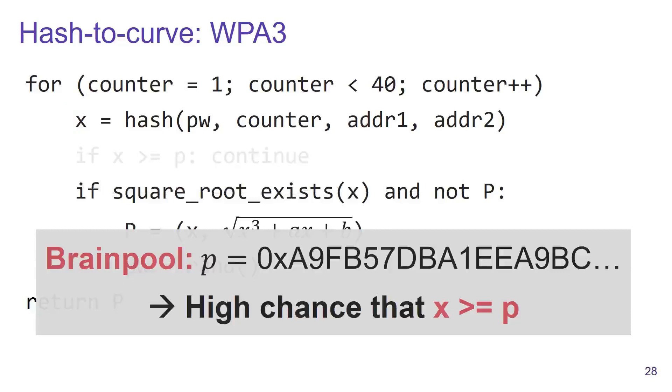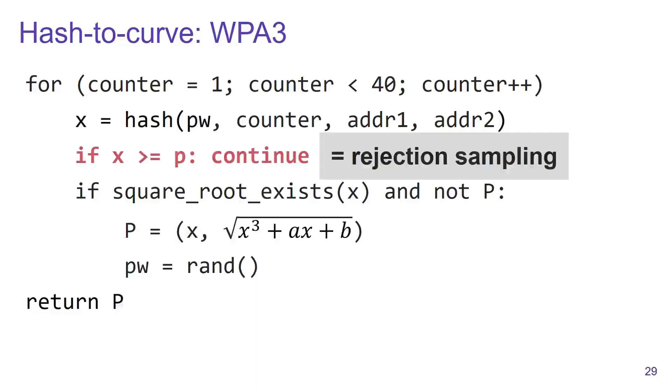In particular, if we use Brainpool curves, then even if we truncate the hash output, there is still a high chance that the resulting x value is bigger than the prime of the curve. We want to avoid that because it introduces a small bias into the subsequent cryptographic calculations.